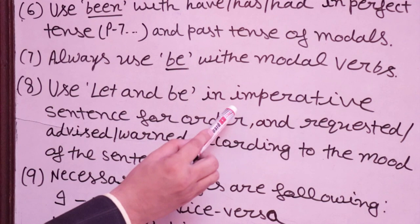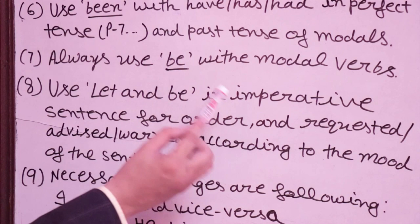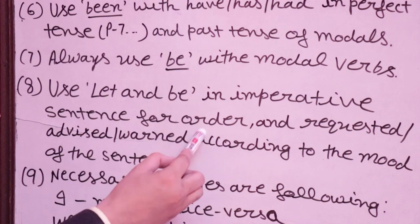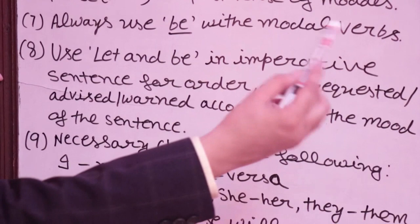Eighth rule: Use 'let' and 'be' in imperative sentences for orders. There are five kinds of sentences; imperative sentences express orders. For example: 'Open the door' becomes 'Let the door be opened.' If it is an order, use let and be. But if it is a request, advice, or want, change it according to the mood of the sentence.